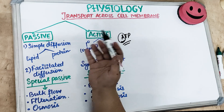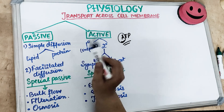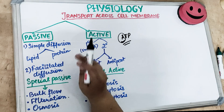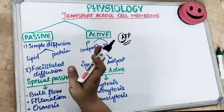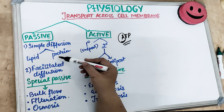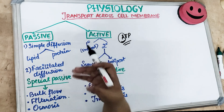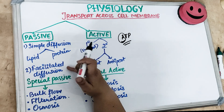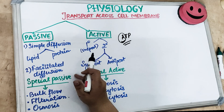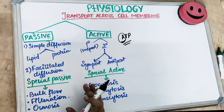Passive transport is divided into three parts. First, simple diffusion - which can occur through the lipid layer (small lipid-soluble molecules passing through) or through the protein layer. Second, facilitated diffusion, which requires a carrier protein - also known as carrier diffusion or mediated diffusion. Third, special kinds of passive transport which include bulk flow, filtration, and osmosis.